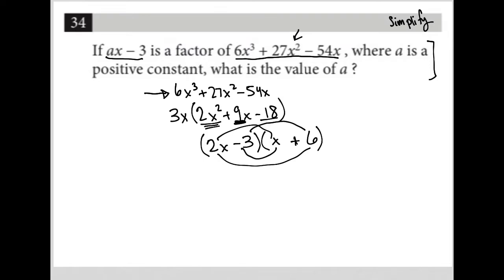So hopefully you followed how I deconstructed that trinomial into the product of two binomials, and hopefully you've had some practice with that in school so you know how to do that on your own. 2x minus 3 and x plus 6, perfect. And don't forget I have the 3x in front.